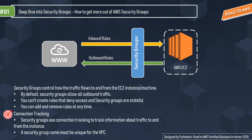By default, all incoming traffic is blocked to the EC2 instance, and by default all outbound traffic from the EC2 instance is allowed. You can't create rules that deny access — if you wish to block something, you simply don't add a rule that allows it. Security groups are stateful, and this is achieved by connection tracking — they track information about traffic to and from the instance and security rules are applied based on the connection state.